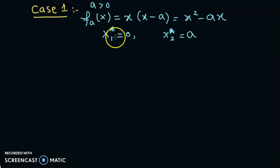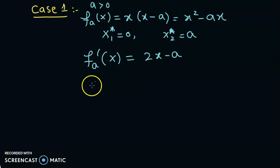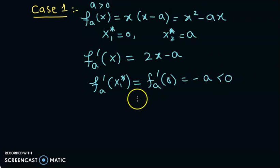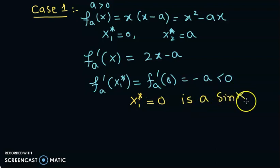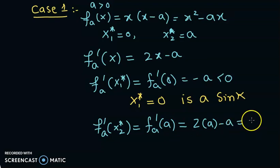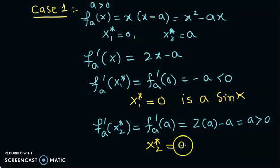At x*₁ = 0, f'(0) = -a. Since a is positive, this is less than 0, so x*₁ = 0 is a sink. Similarly, at x*₂ = a, f'(a) = 2a - a = a, which is greater than 0, so x*₂ = a is a source.